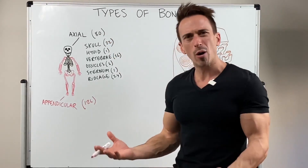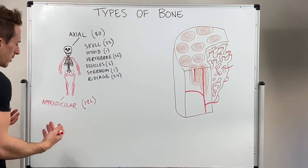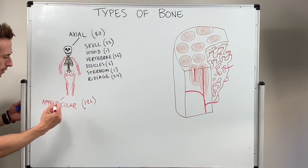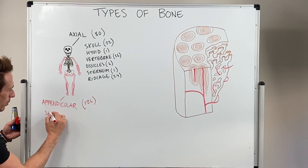So what bones are part of the appendicular skeleton? Well, it's basically going to be the shoulder girdle.